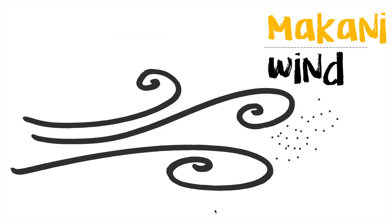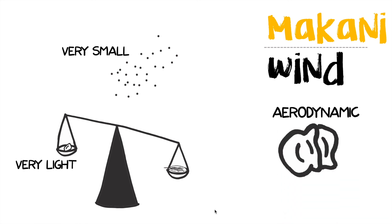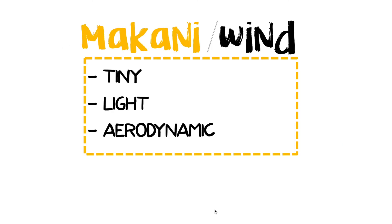Last but not least, we have our makani, or wind. Wind in the form of jet streams can transport small, light things like seeds to Hawai'i. Species that arrived via the makani had to have seeds that were very small, very light, or aerodynamic. This sketch of an āli'i seed pod shows it has a little air bladder in the center — kind of like a tiny balloon — with little wing attachments that help it stay afloat in the air longer. To recap: seeds that traveled by wind were tiny, light, and aerodynamic.